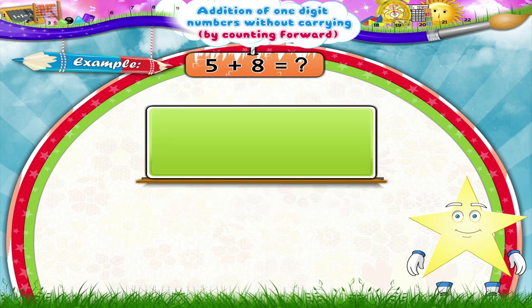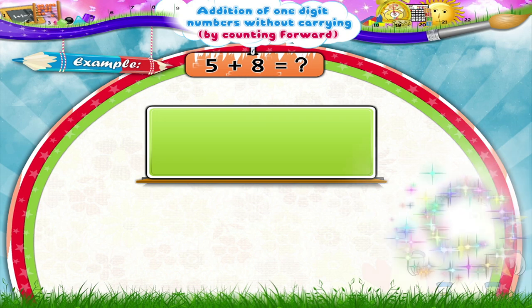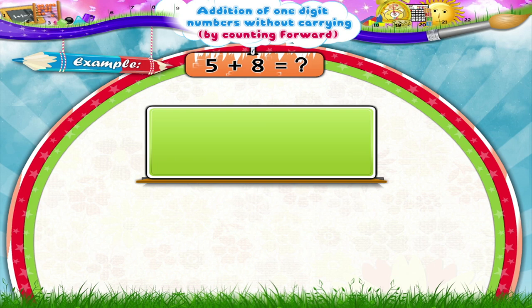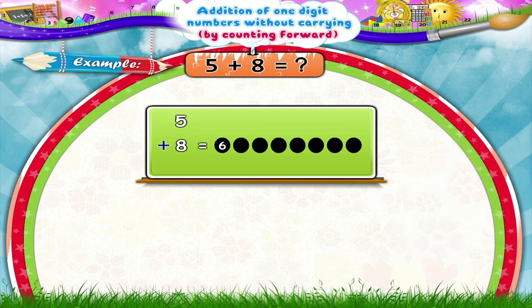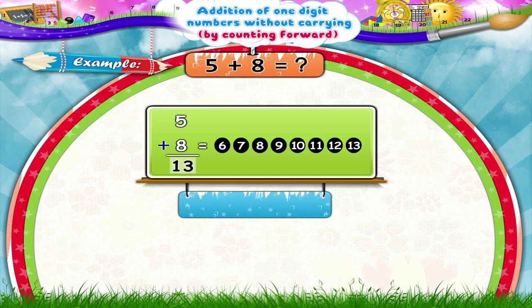Stari! We can also do addition by counting forward. See! We have to add 8 rupees to 5. So we will draw 8 dots. Now let's count the numbers forward from 5. Yes, 6, 7, 8, 9, 10, 11, 12, 13. Thus, 5 plus 8 equals 13.